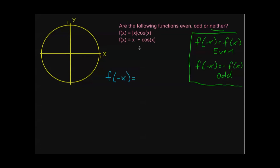For the first function, f of negative x is the absolute value of negative x times cosine of negative x. The absolute value of negative x is the same as the absolute value of x — no change there. And cosine is an even function, so cosine of negative x equals cosine of positive x. This is just our original function f of x. So we've shown that f of negative x equals f of x, meaning this first function is even.